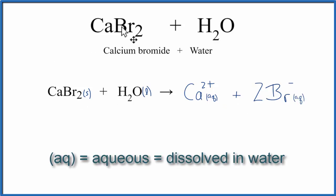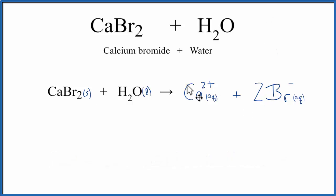And that makes this the equation for CaBr2 plus H2O, calcium bromide and water. Note that if you leave this out for a while, the water, the aqueous part, that'll evaporate, and we'll be back with calcium bromide. This is Dr. B, and thanks for watching.